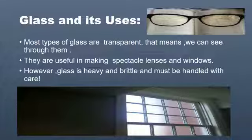Glass and its uses: most types of glass are transparent, which means we can see through them. They are useful in making spectacle lenses and windows. However, glass is heavy and brittle and must be handled with care. It's breakable, so you have to be very careful when you are using glass objects.